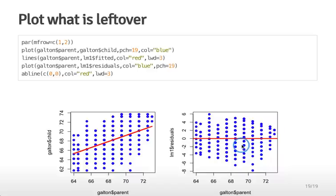In the next lecture we'll see how we can use this variation left over after fitting the line to make some inference and determine what's going on in the larger population.